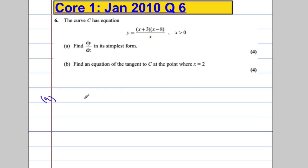So, part A, we're going to write it as y equals, and expanding it out, we're going to get x squared minus 5x minus 24. And that's all over x.